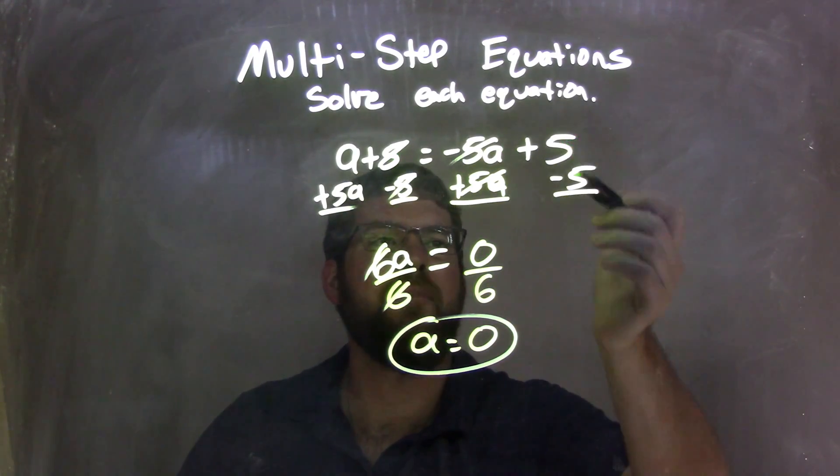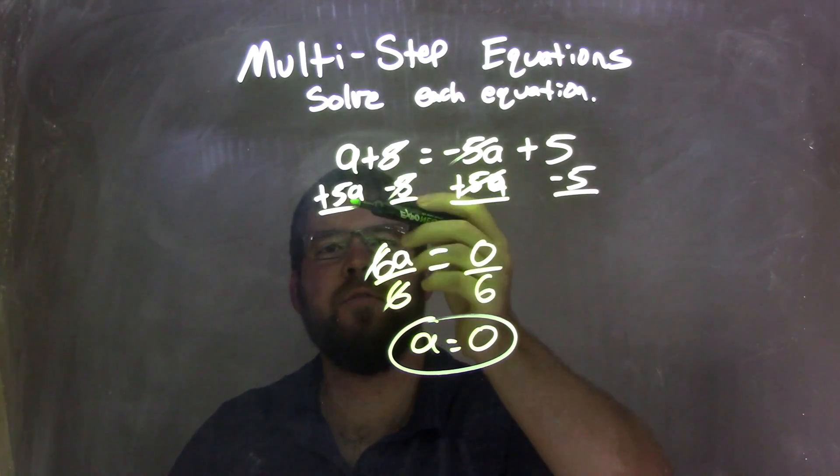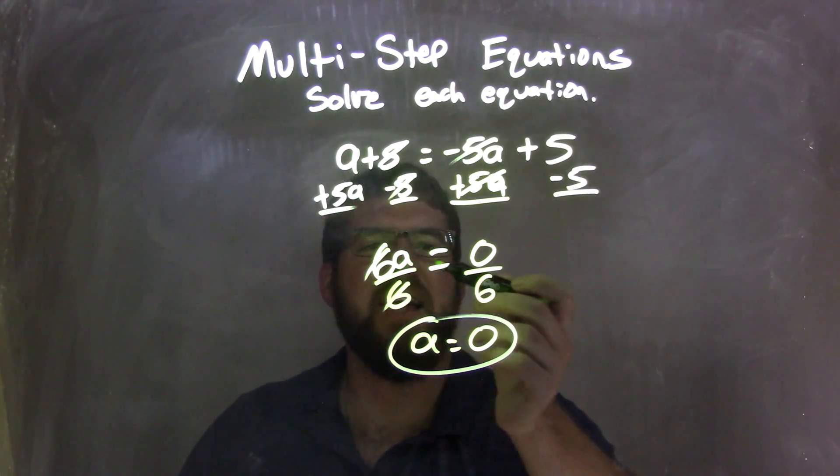The 5As cancel, and the 5 minus 5 ended up canceling. But A plus 5A was 6A. So we had 6A equals 0.